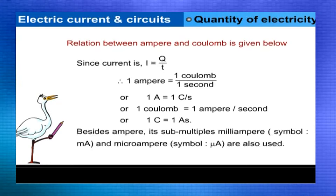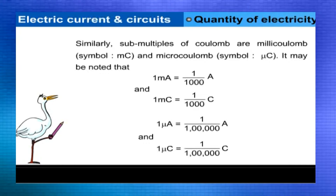Besides the ampere, its sub-multiples — milliampere (symbol mA) and microampere (symbol μA) — are also used. Similarly, sub-multiples of coulomb are millicoulomb (symbol mC) and microcoulomb (symbol μC). It may be noted that 1 mA = 1/1000 A and 1 mC = 1/1000 C. One μA = 1/1,000,000 A and one μC = 1/1,000,000 C.